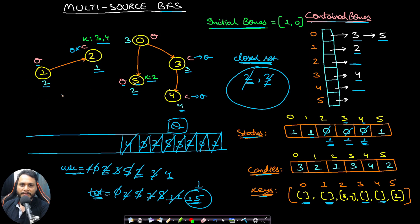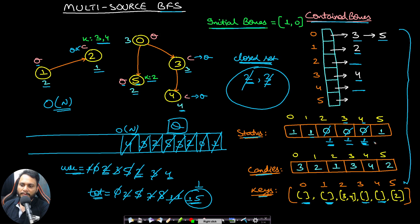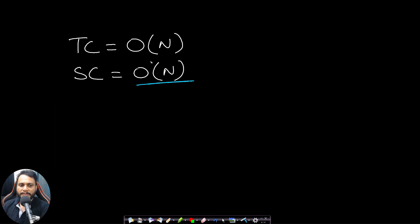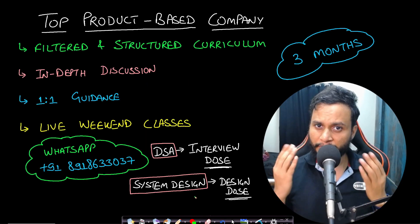In this approach we traverse each node exactly once, so time complexity is O(n). Space complexity is also O(n) for the queue and the closedSet. Let's now look at the code.